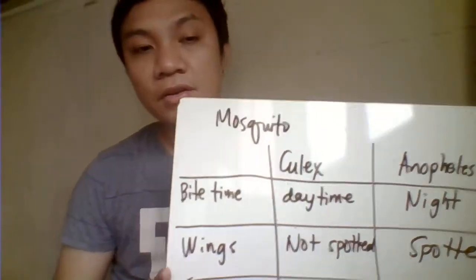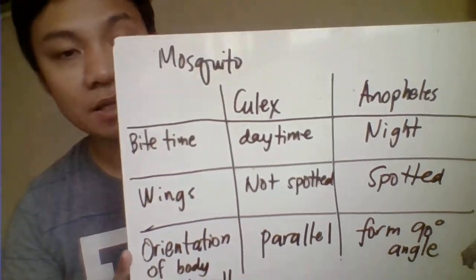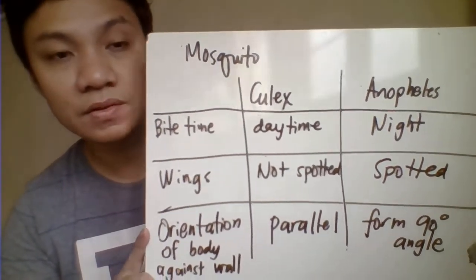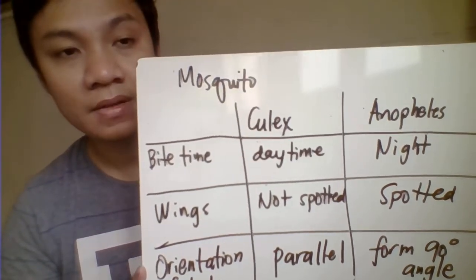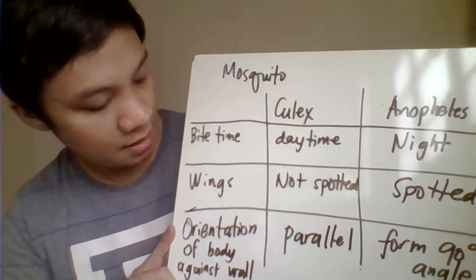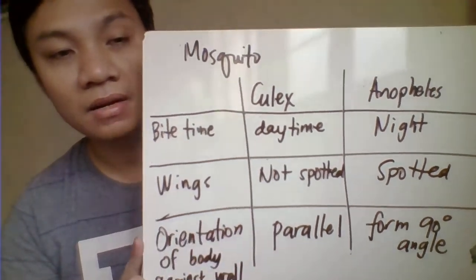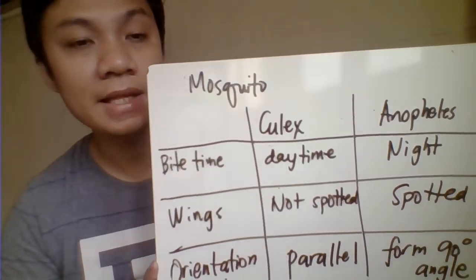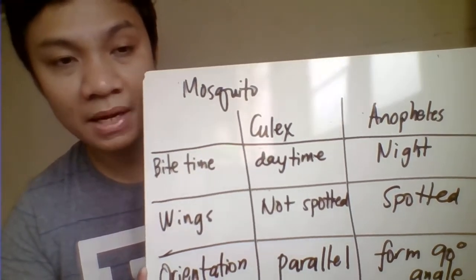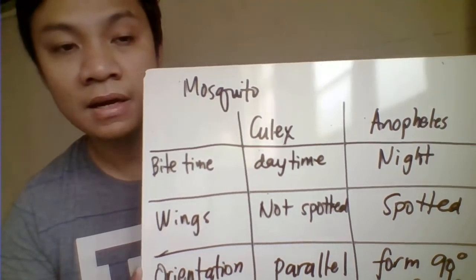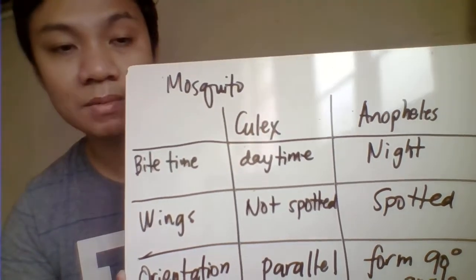Speaking about mosquito identification, the most common genera are Culex versus Anopheles. They are differentiated by bite time: the Anopheles mosquito bites during nighttime compared to daytime for Culex. Another difference is their wings — the Anopheles mosquito has spotted wings, whereas the Culex does not have spots.